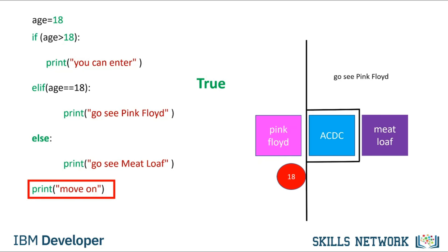If the variable age was 17, the statement 'go see meatloaf' would print. Similarly, if the age was greater than 18, the statement 'you can enter' would print. Check the labs for more examples.